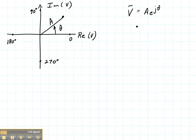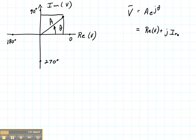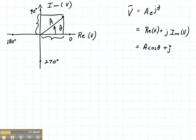We can write this in terms of its rectangular coordinates if we consider the real part and the imaginary part. This voltage can be written as the real part of the voltage plus J times the imaginary part of the voltage. The real part can be obtained from geometry — that is A times the cosine of theta — and the imaginary part is A times the sine of theta.